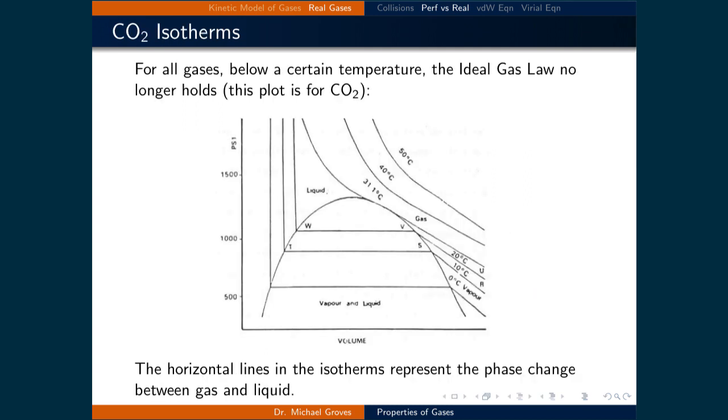These intermolecular forces become important when the conditions are such that the gas should condense to a liquid or a solid. This means that, depending on the gas below a certain characteristic temperature, the ideal gas law no longer holds. The figure in this example is a phase diagram for carbon dioxide. There is a gas region, a phase transition region where both liquid and gas are present, and a liquid region.